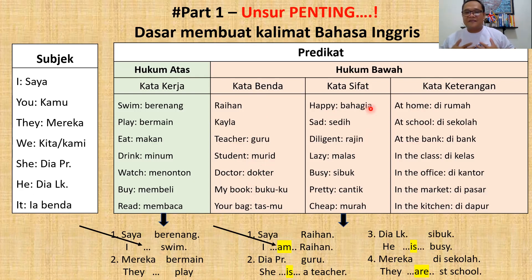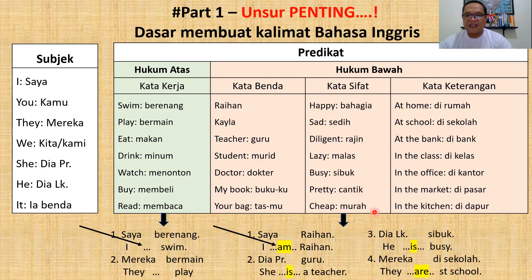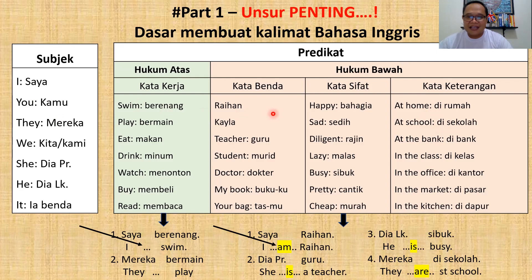Sedih. Diligent. Lazy. Busy — awas, busy itu bukan kata kerja, busy itu kata sifat, karena dia menjelaskan orang yang beraktivitas. Pretty (cantik). Cheap (murah). Kemudian kata keterangan: at home (di rumah), at school (di sekolah), at the bank (di bank), in the class (di kelas), in the office (di kantor), in the market (di pasar), in the kitchen (di dapur). Ini semua menjelaskan keterangan.